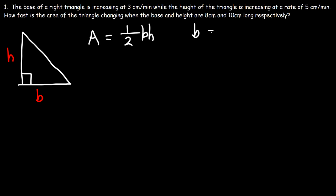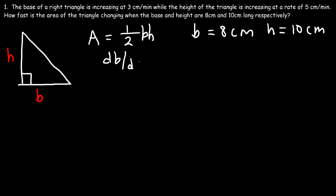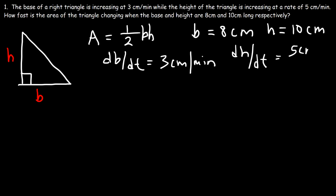The base of the right triangle is 8 centimeters and the height is 10 centimeters. We also know the rate at which the base and the height are changing. The base is increasing at 3 centimeters per minute and the height is increasing at a rate of 5 centimeters per minute. With this information, how can we determine how fast the area of the triangle is changing?